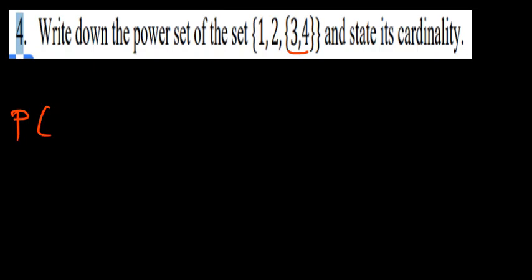Alright, let's solve another question on cardinality. Number 4 — they're saying write down the power set of {1, 2, {3, 4}}. Notice that this is a set. We're going to name this set A. Remember that {3, 4} is taken as one entity — one element. So this set has three elements, meaning it should have 2 to the power 3 equals 8 subsets.